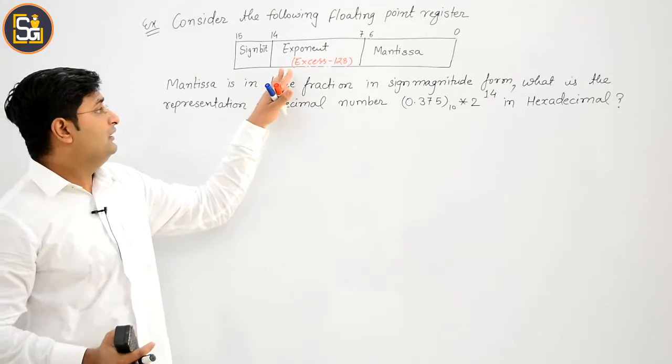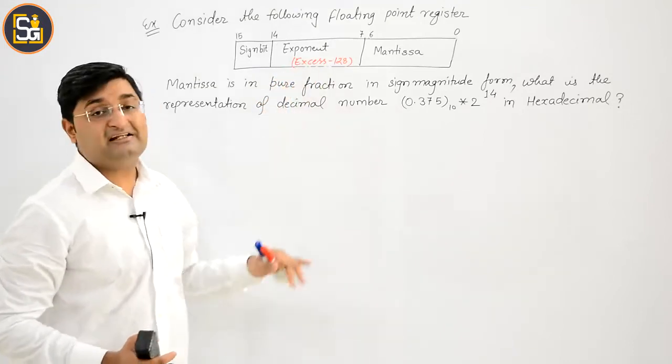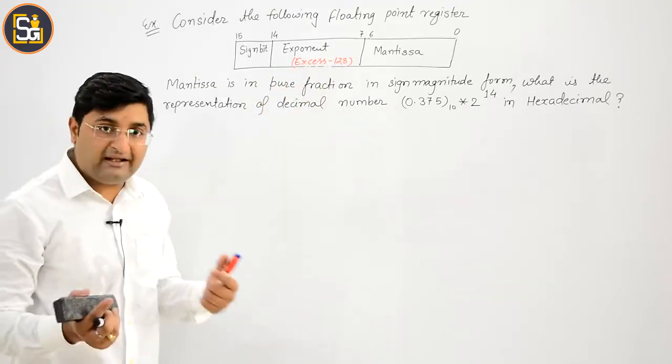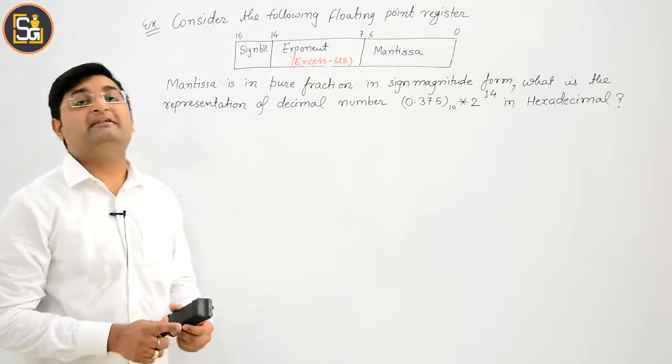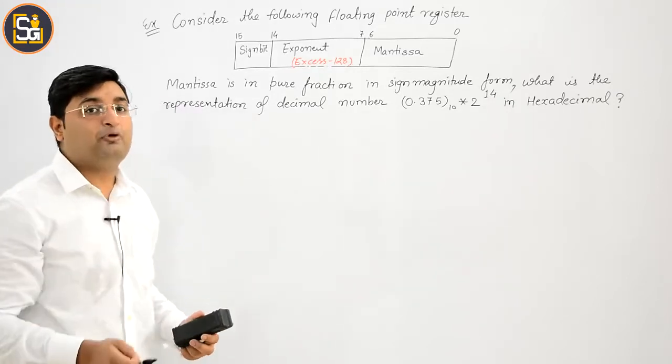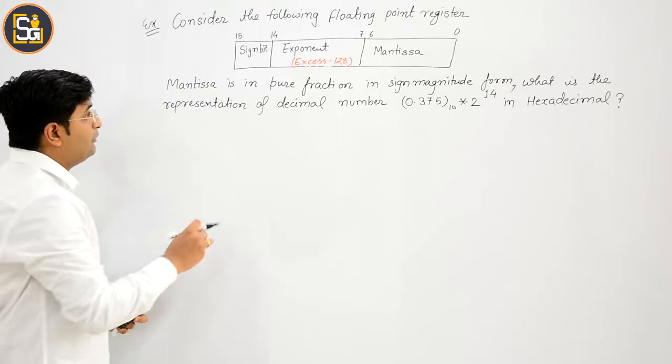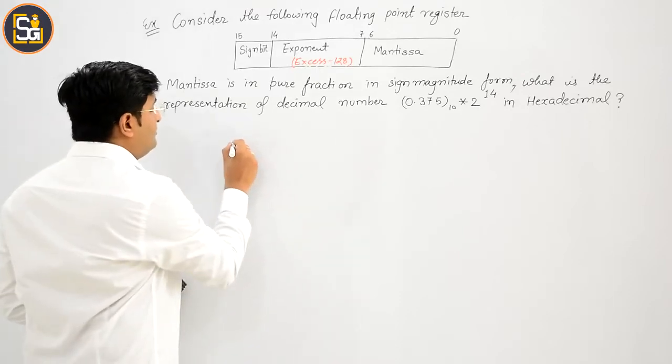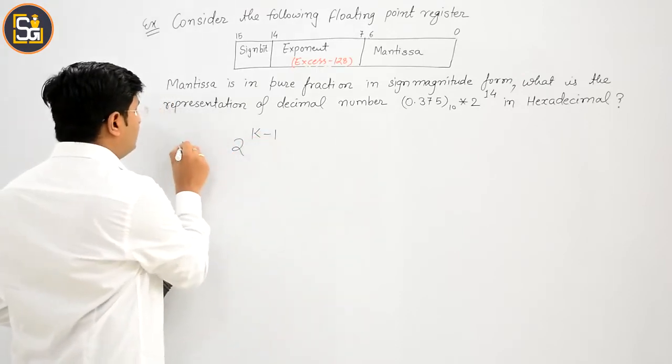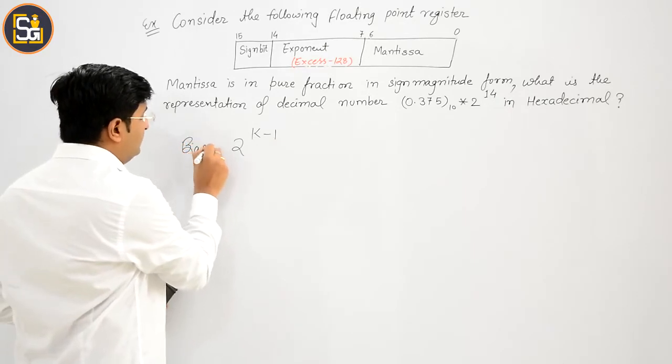Now, obviously excess 128 दे रखा है. नहीं भी दे रखा होता, तो आपको पता होना चाहिए था procedure. अगर 8-bit का, तो 2 की पावर k-1 आपका bias होता है.